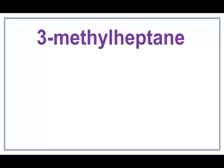Let's draw the structure for 3-methylheptane. Hept right here tells us that there are 7 carbons in the parent chain. Ane right here tells us that there are only single bonds between these carbons.